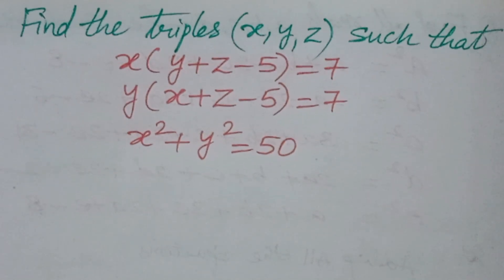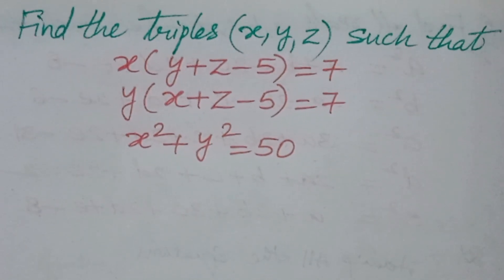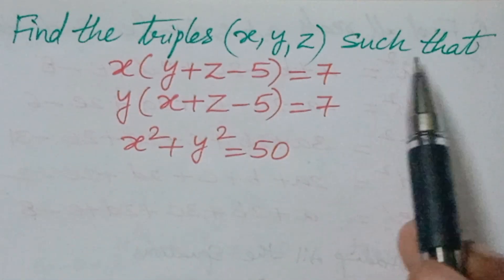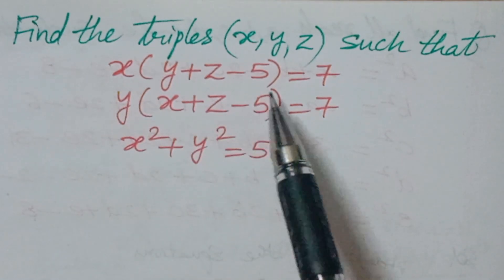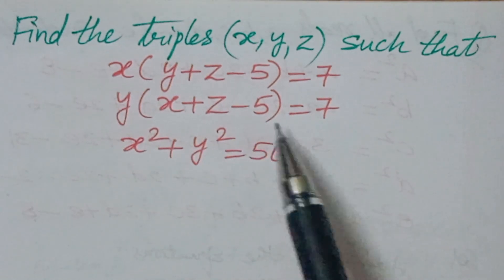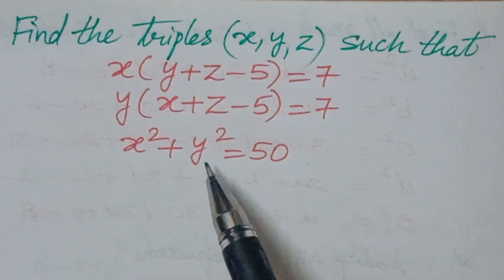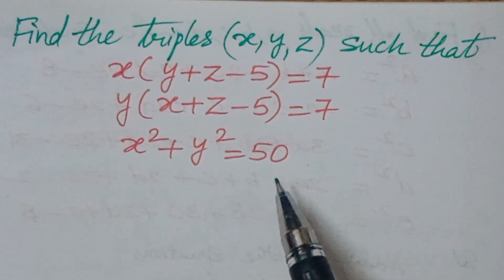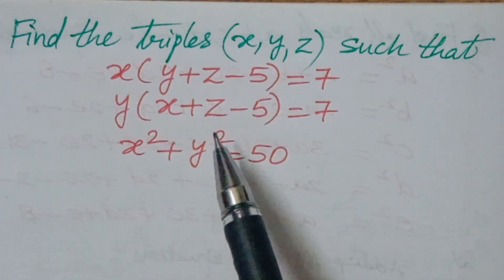Hello, welcome back to IONCG Max. Today we are looking at a lumped problem. The question is: given find the triple (x, y, z) such that x(y + z − 5) = 7, y(x + z − 5) = 7, and x² + y² = 50. Some logic is involved, that's why this problem was selected.